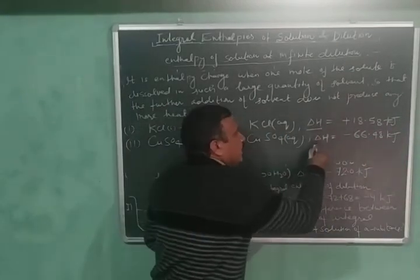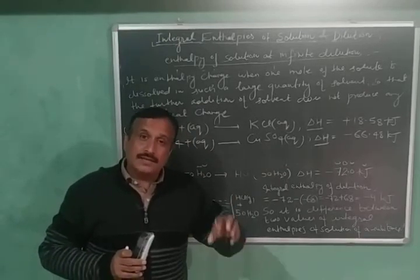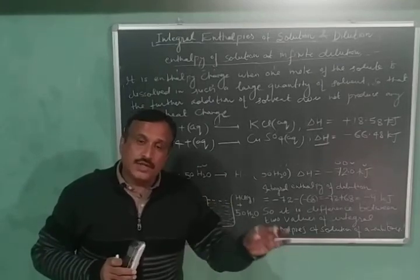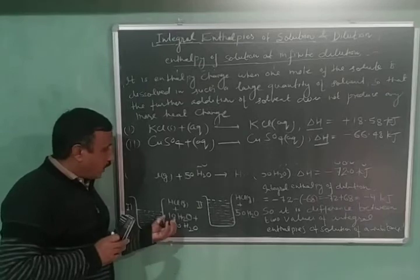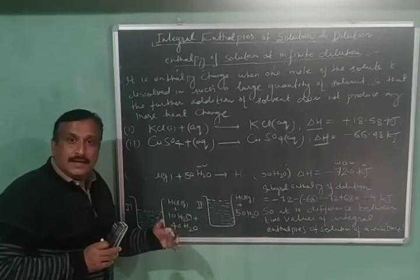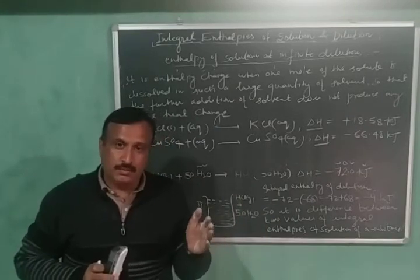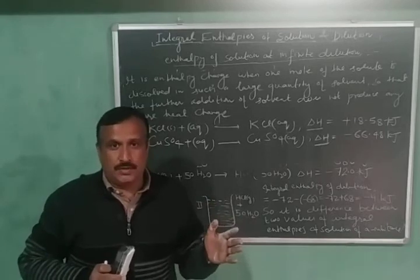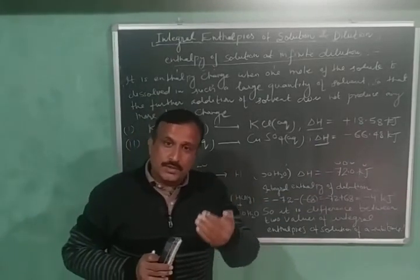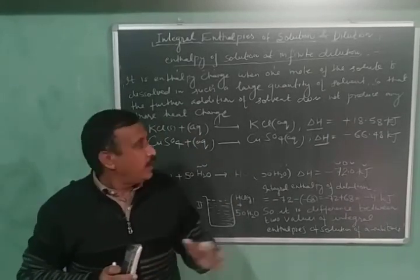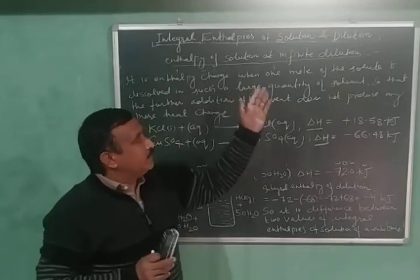These values are virtually constant, because when more solvent is added to an infinitely dilute solution, that addition of solvent does not produce any more heat change — unlike the earlier example where adding 40 moles of water released additional heat. The enthalpy of solution at infinite dilution is constant for a particular solute in a particular solvent at a particular temperature, and these are the maximum values of the enthalpies of solution.